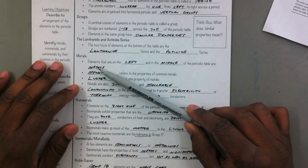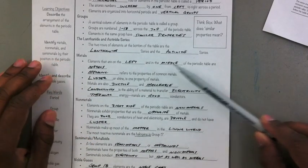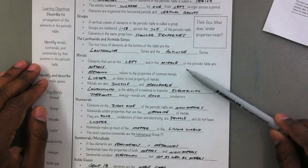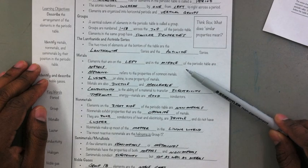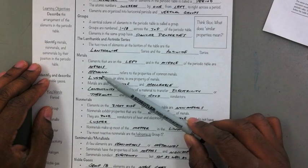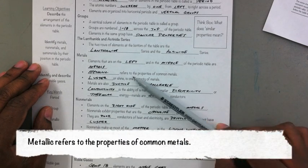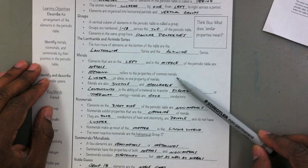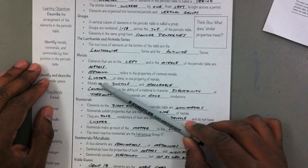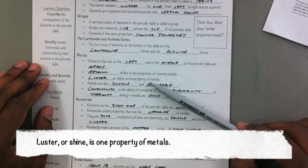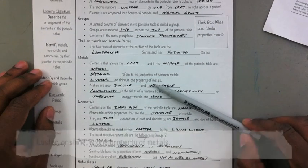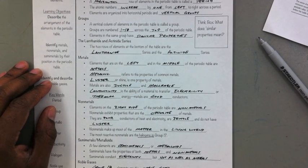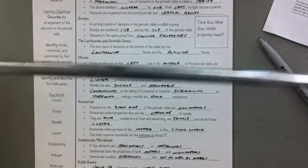Metals. Metals are on the left and in the middle of the periodic table. Metallic refers to the properties of common metals. Luster or shine is one property of metals. It's easy to identify metals because they are often shiny. Here's an example.